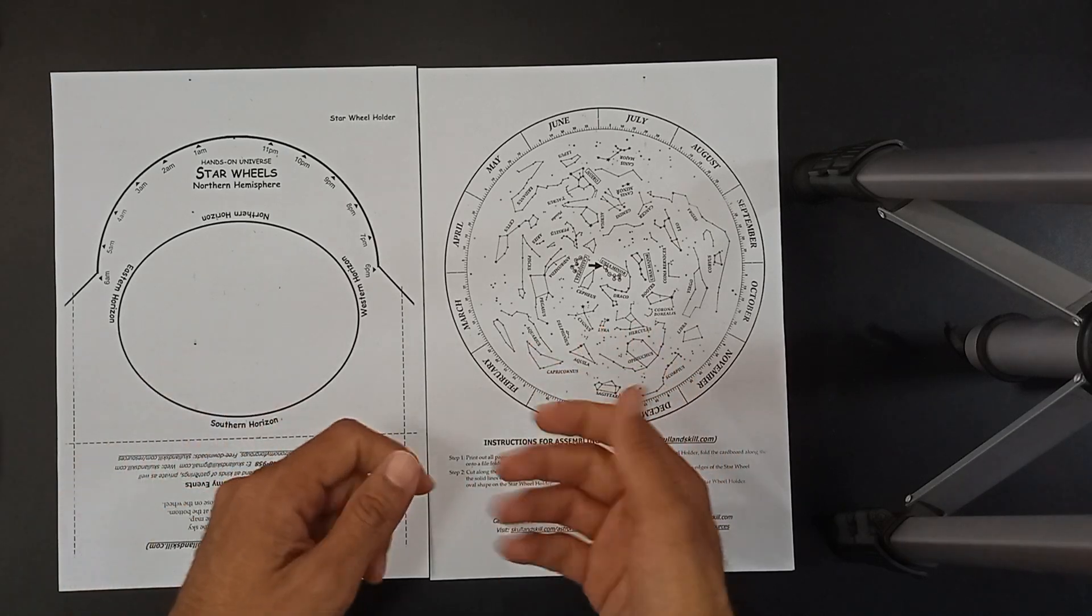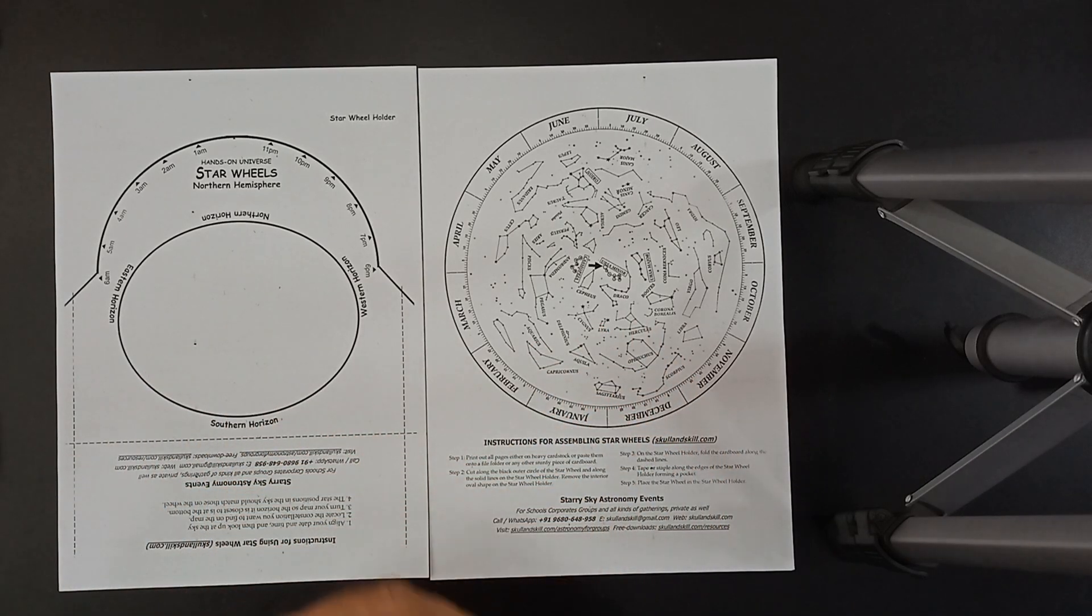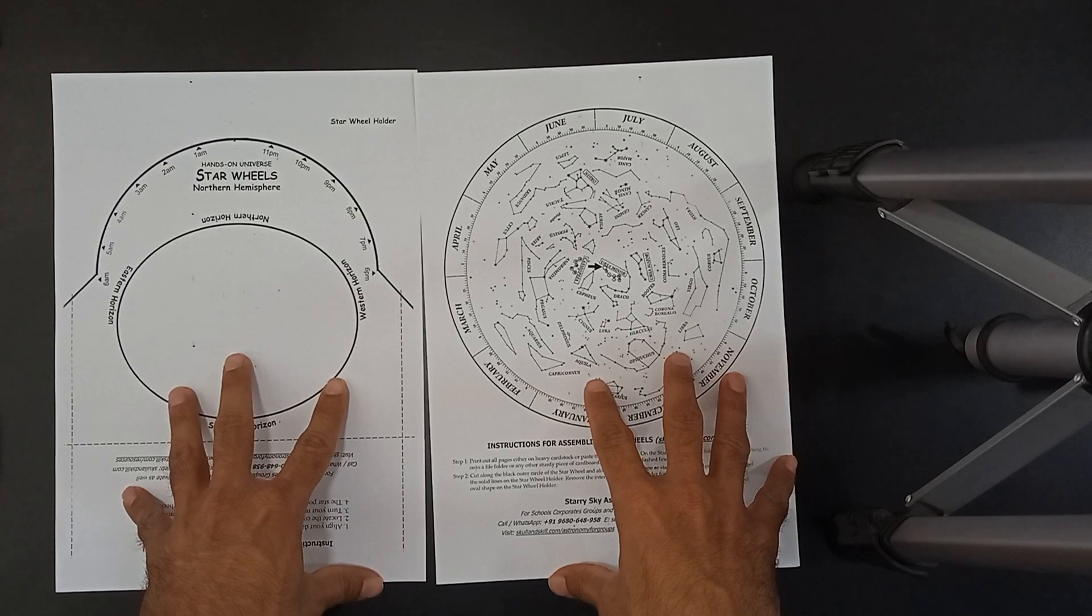First of all go to the website skullandskill.com and go to astronomy page free learning resources. You will find buttons over there to download the printouts for the planisphere. These are the printouts I have already taken for you.